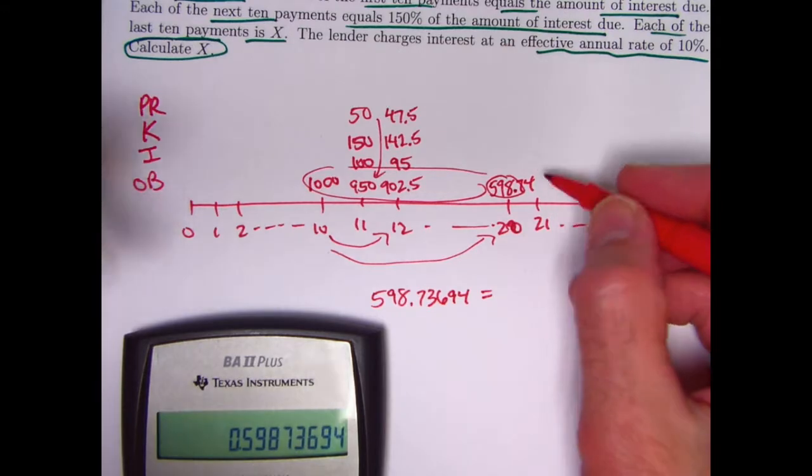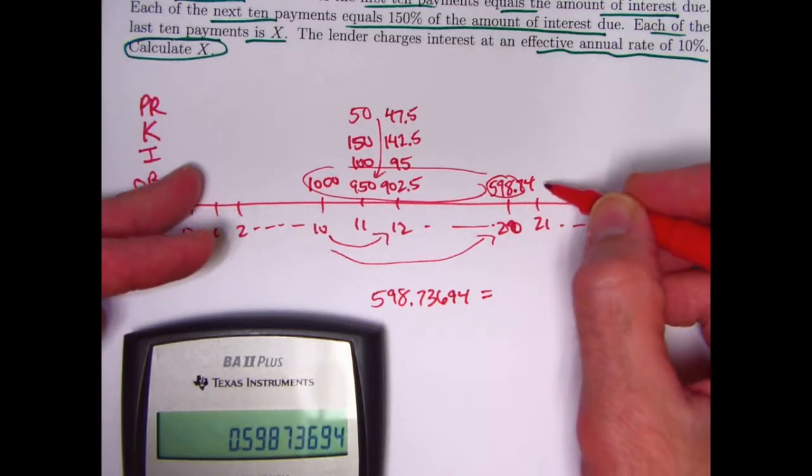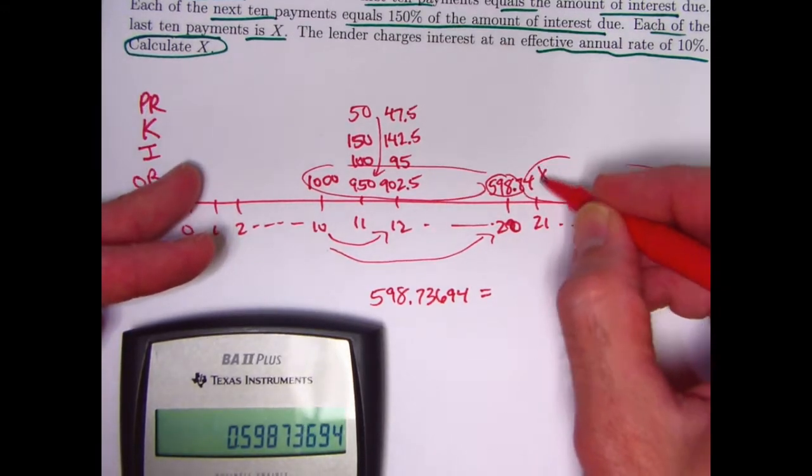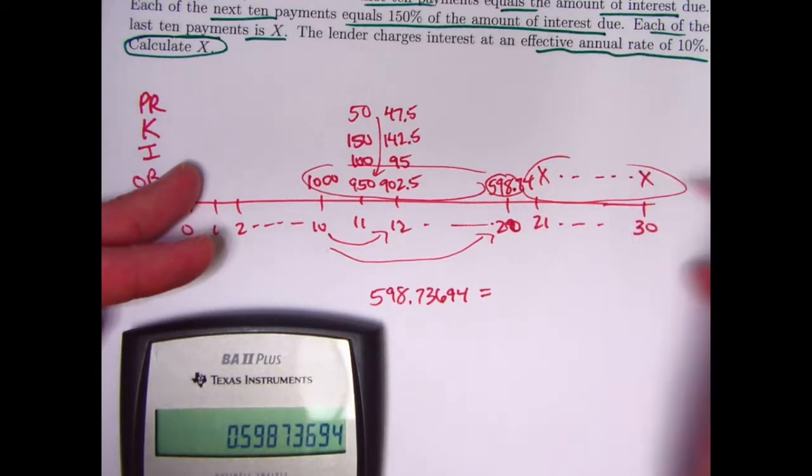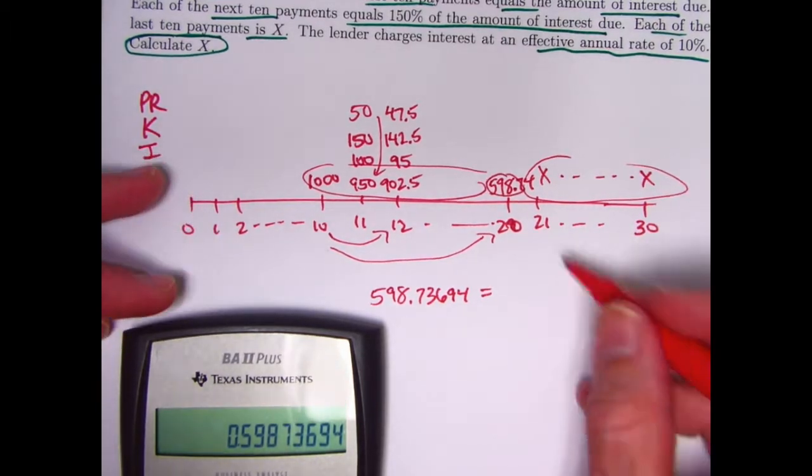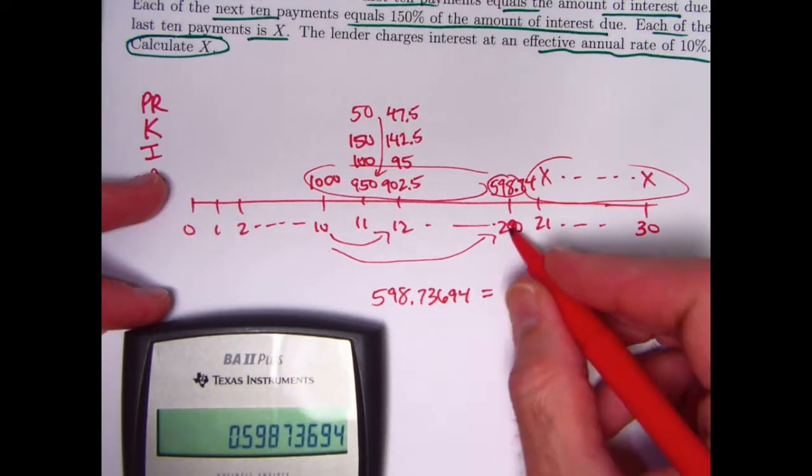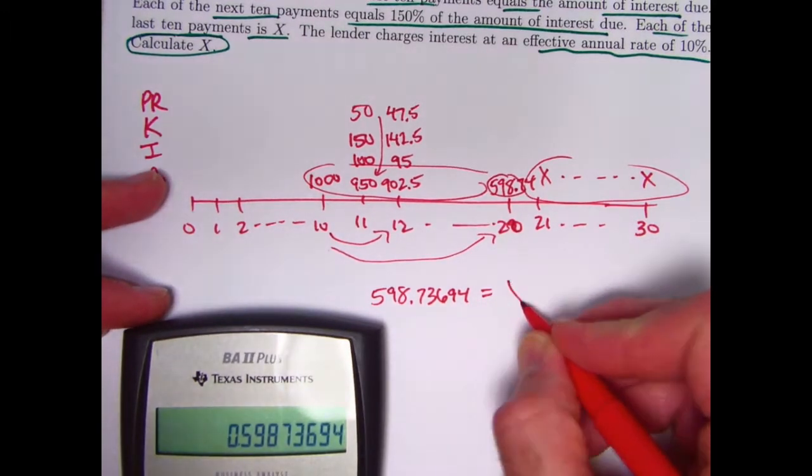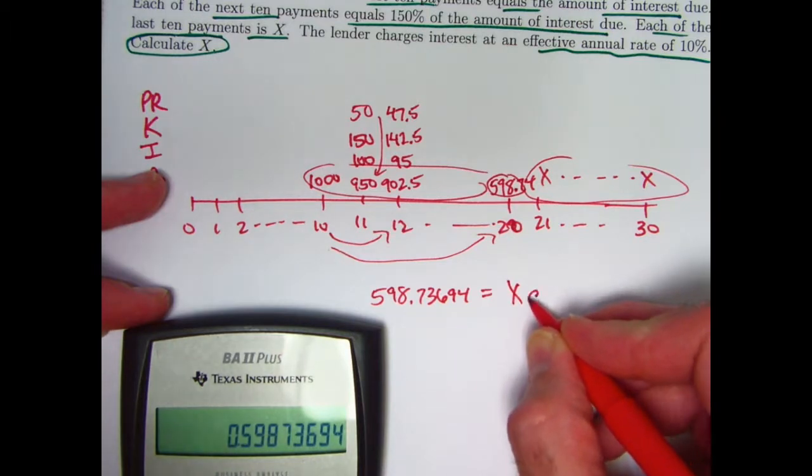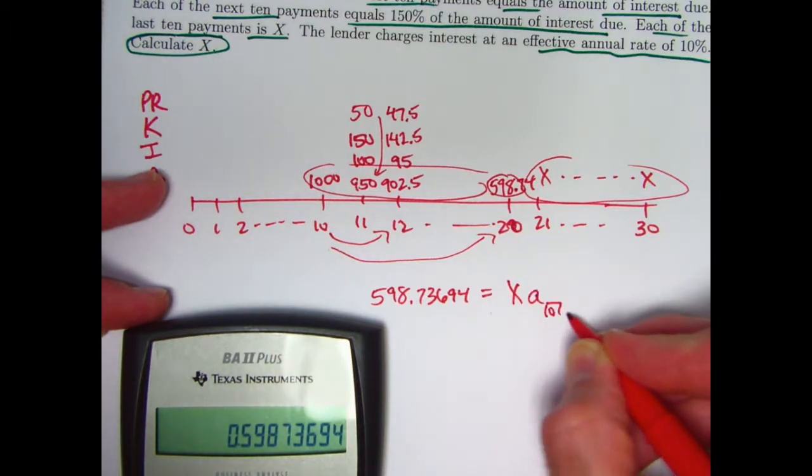That'll be like the new loan amount, if you will, at time 20. And now you're going to use ordinary amortization to figure out these new payments of X for these last 10 years. This present value at time 20 is going to be equal to X times A-10 at 0.1, right?